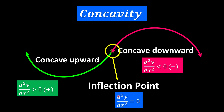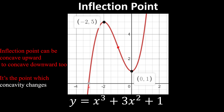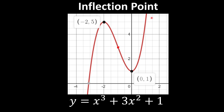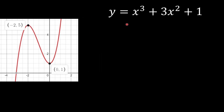Let's see an example. Here we have a cubic function curve represented by x³ + 3x² + 1. Since this is a cubic function, we have two turning points. At a certain point we have the inflection point, where the curve changes from concave downward to become concave upward. That particular point is what we call the inflection point.